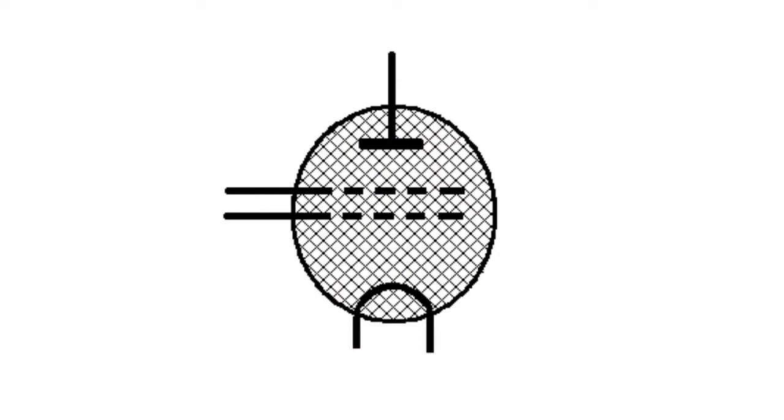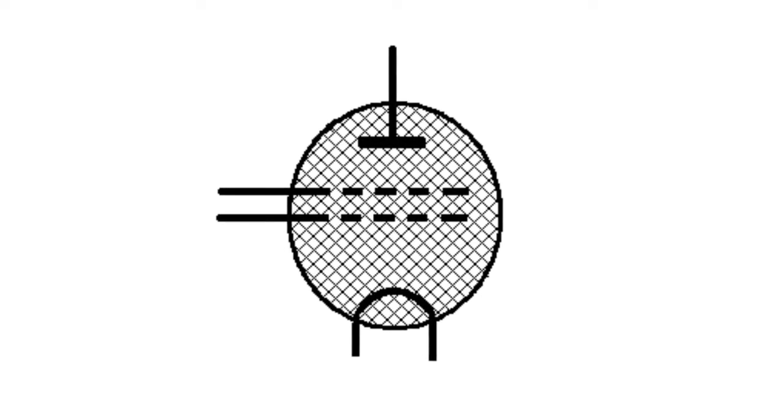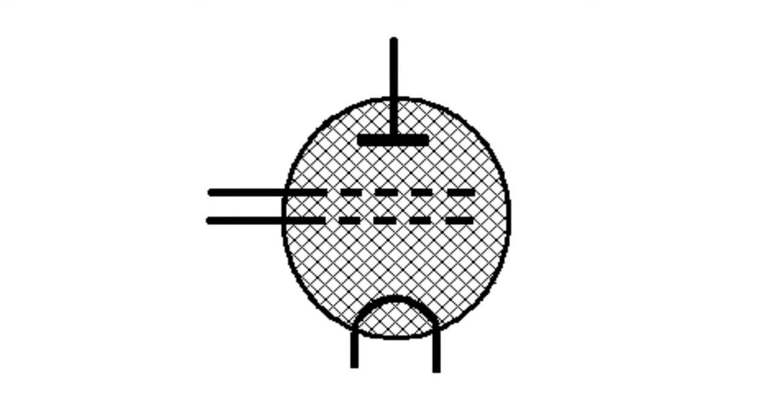In the two-grid thyratrons, the first grid provides the trigger spark, facilitating and stabilizing the process of discharge in the anode circuit.